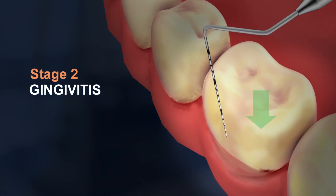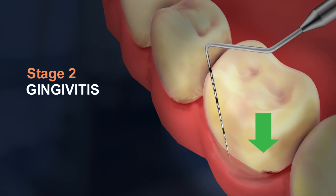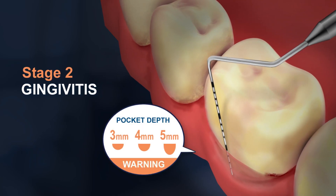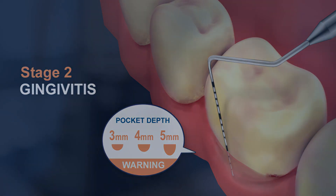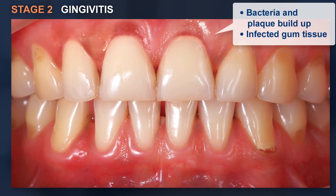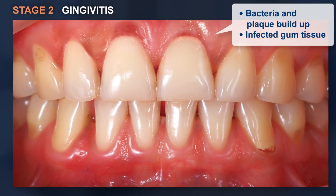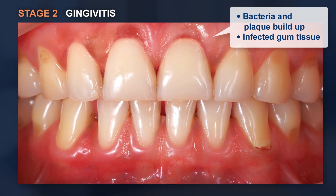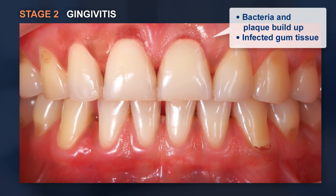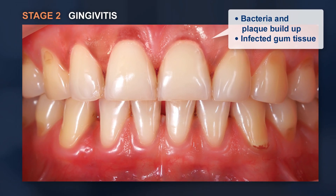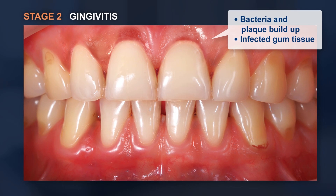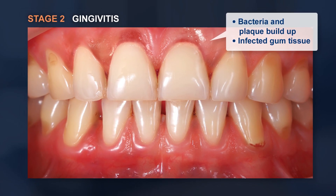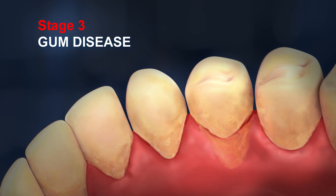Stage 2 is the early onset of gum disease, known as gingivitis, and is indicated by pocket depths of 3 to 4 millimeters. Gingivitis is caused when bacteria start to multiply within the plaque and build up on the surface of the teeth, causing red and slightly inflamed, infected gum tissue.